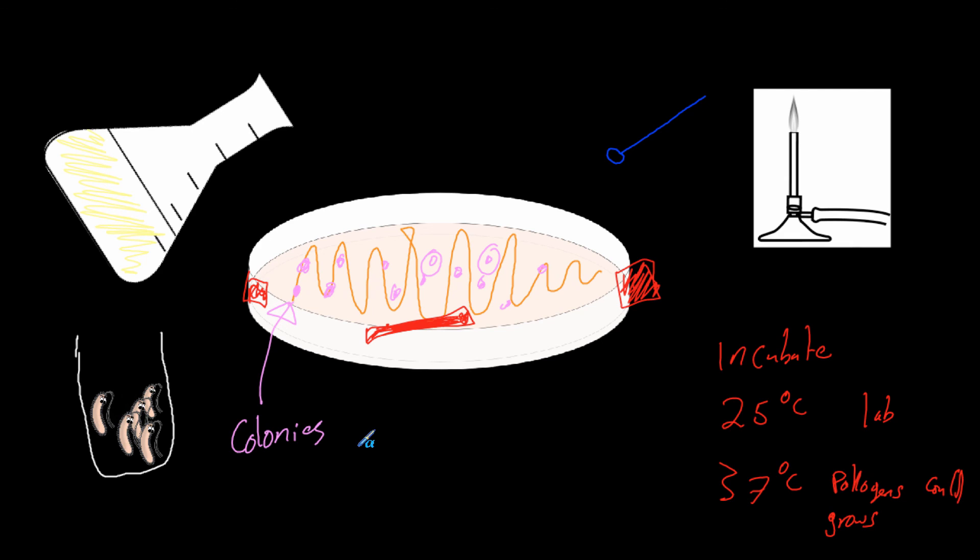And that is basically how we grow bacteria. In the next video we're going to look at different things we can do to study bacteria. We can add antibiotics to the growth medium, and that will tell us a lot about the bacteria. But this is how we grow bacteria in a lab. If you have any questions, please use the link below to send me an email or comment. I look forward to seeing you in the next video. Thank you.